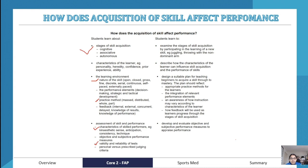The three stages of skill acquisition occur in order. First, the cognitive stage: the learner is in an initial learning phase and needs a coach or demonstrator to walk them through movements. Movements are slow and broken into pieces. Many errors are made. Lots of feedback is needed to correct technique — both positive and negative feedback. There is lots of thinking required to execute the mechanical actions.